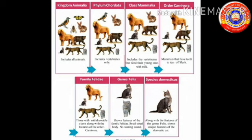Species domesticus, along with the features of the genus Felis, shows the unique features of the domestic cat. So the domestic cat belongs to species domesticus, genus Felis, family Felidae, order Carnivora, class Mammalia, phylum Chordata, and kingdom Animalia.